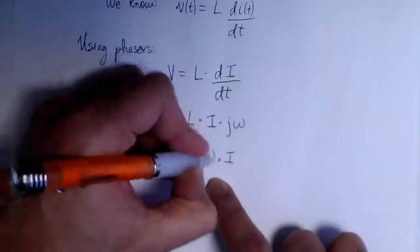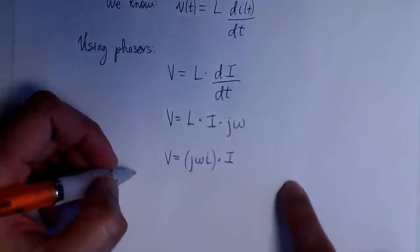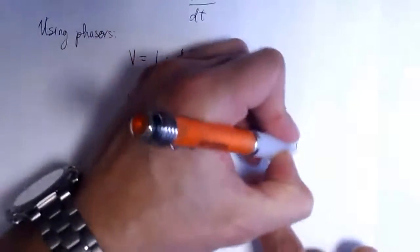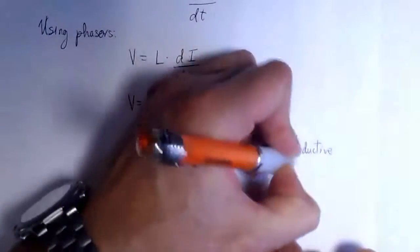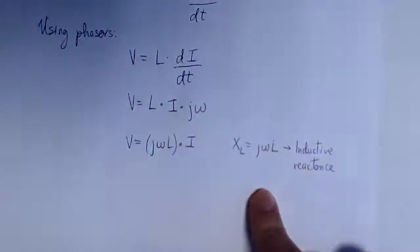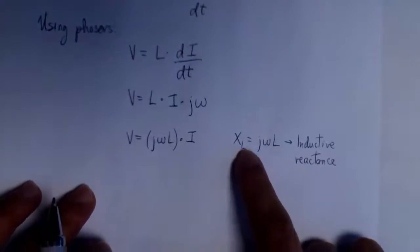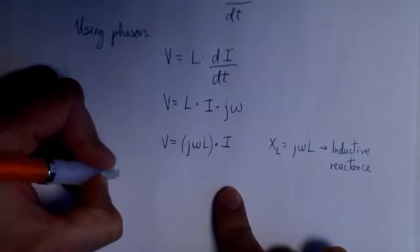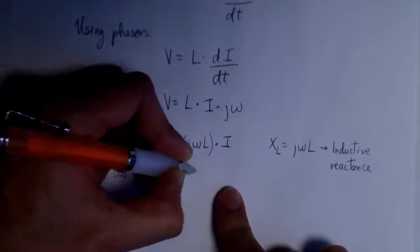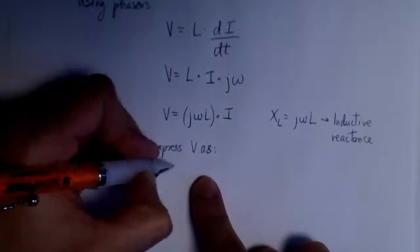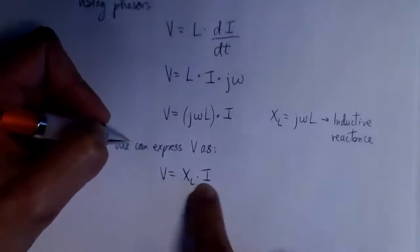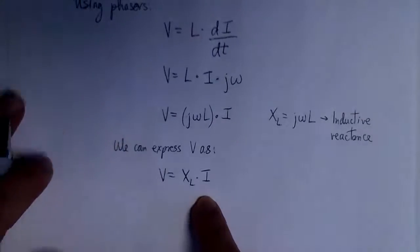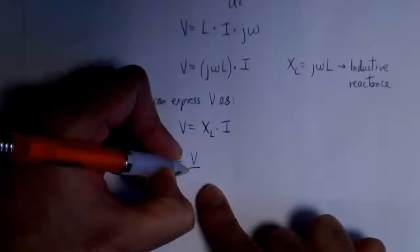Something interesting to note here is that the relationship between the voltage phasor and the current phasor is just a constant — they behave like resistances. We call this constant jωL the inductive reactance XL. Its units are ohms and it represents the opposition of the inductor to the flow of current, just like resistance for a resistor. So we can express the phasor of the voltage as XL times the current phasor — it looks like Ohm's law. We can then find the phasor of the current by dividing the voltage phasor by XL.